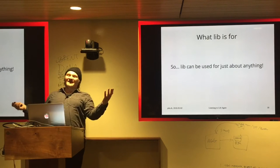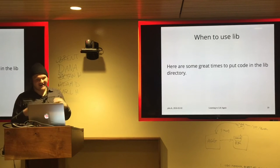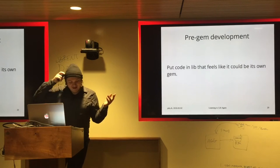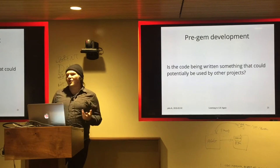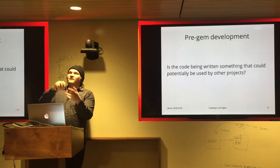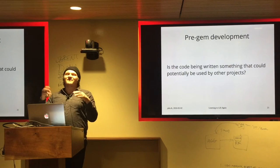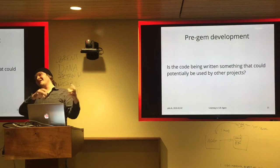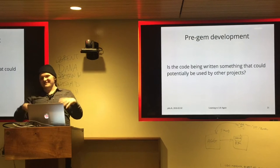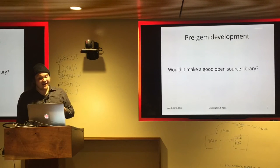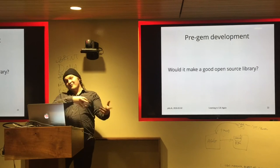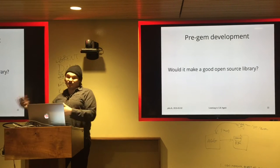Here are the times when you should actually use lib. If you're working on a project that feels like it could be its own gem, that's when you should use lib. If you're asking yourself whether this code could be used by other projects internally — if you have business logic you can apply across codebases, maybe it could be a gem you just require. Would it make a good open source library? Lib is a really good transition path to creating an open source library.